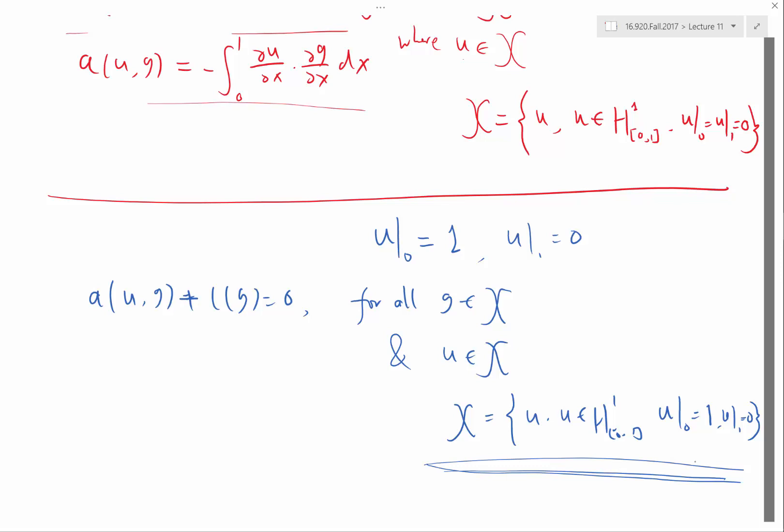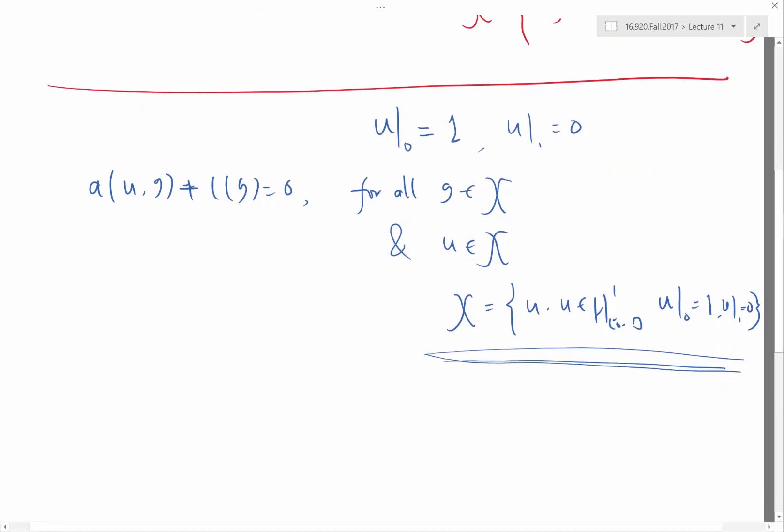A linear space, we talked about last week, is that if I have a function u and v in the linear space, then u plus v also has to be in the same linear space. If I have u in the linear space, then any scalar times u has to be in the linear space. This is not true because my boundary condition would not be satisfied if I have u plus v. Then u plus v at the boundary would be equal to 2 as opposed to 1. So this space is what we call an affine space. Let me put it as X_bc is an affine space.